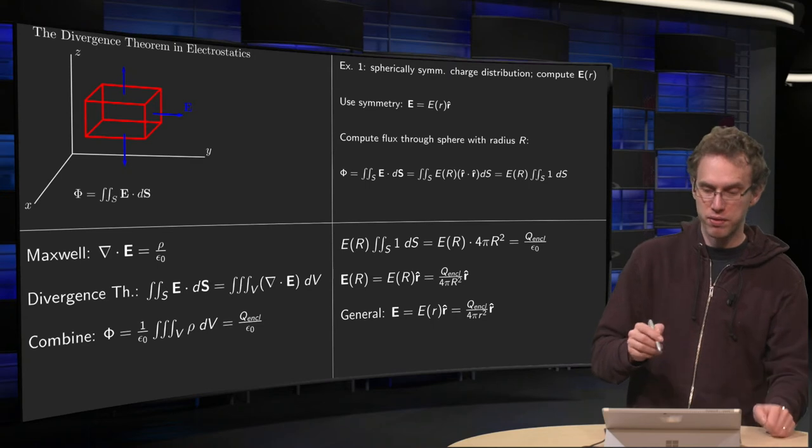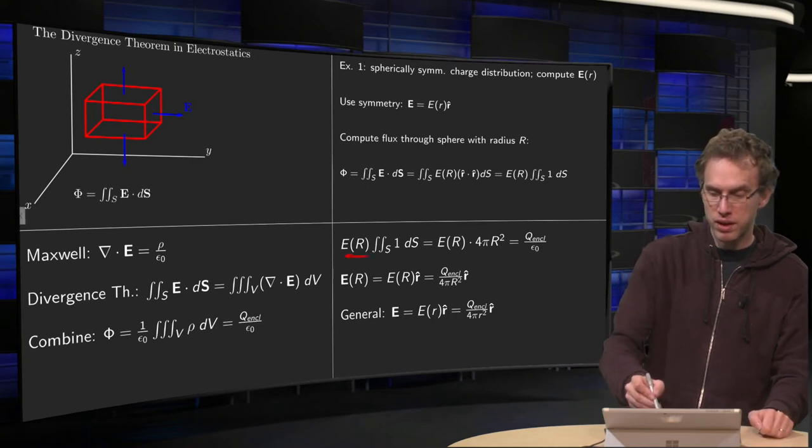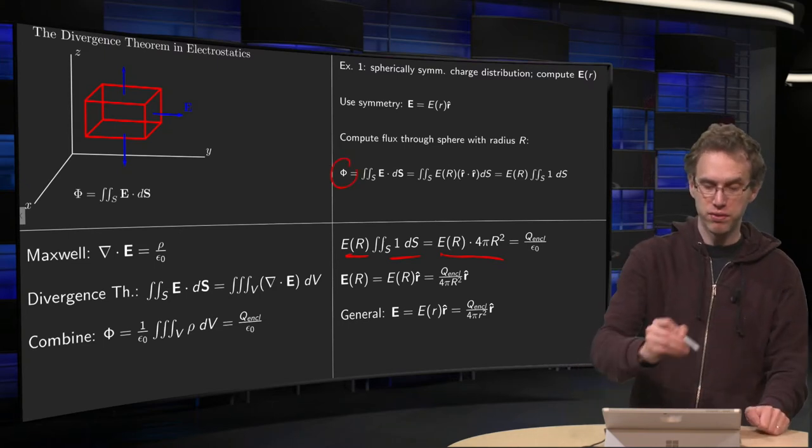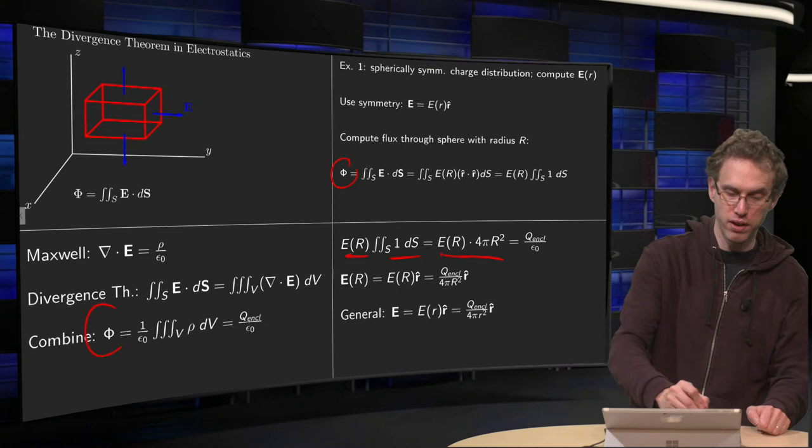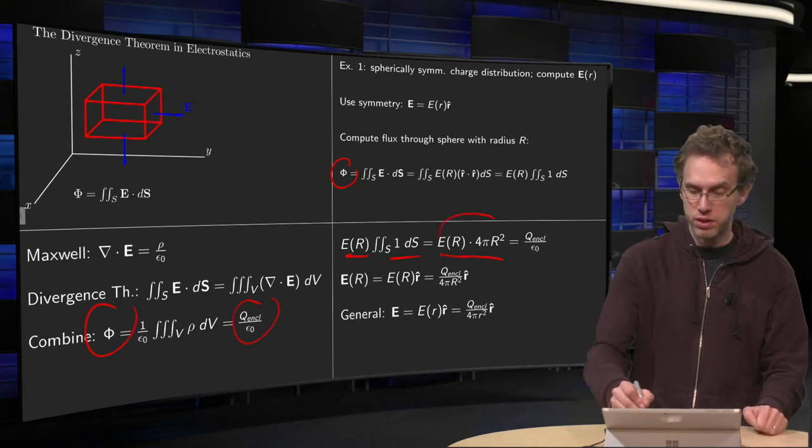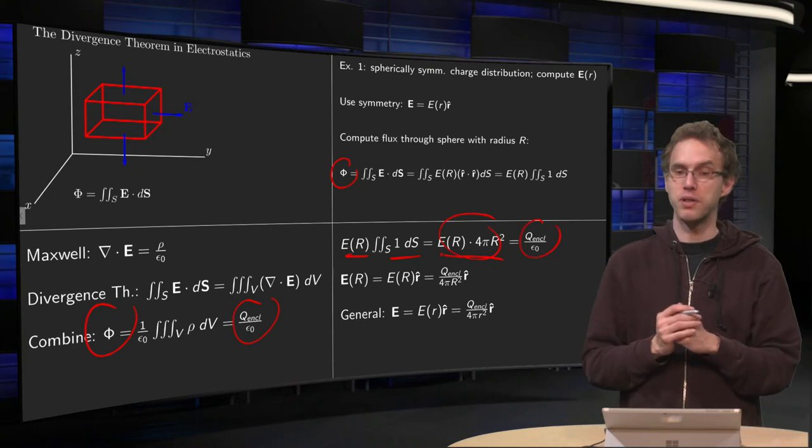So what do we have? Your E times integral of 1 equals E(R) times 4 pi R squared, and this phi, for that we had the divergence theorem, this phi, was q enclosed over epsilon zero.